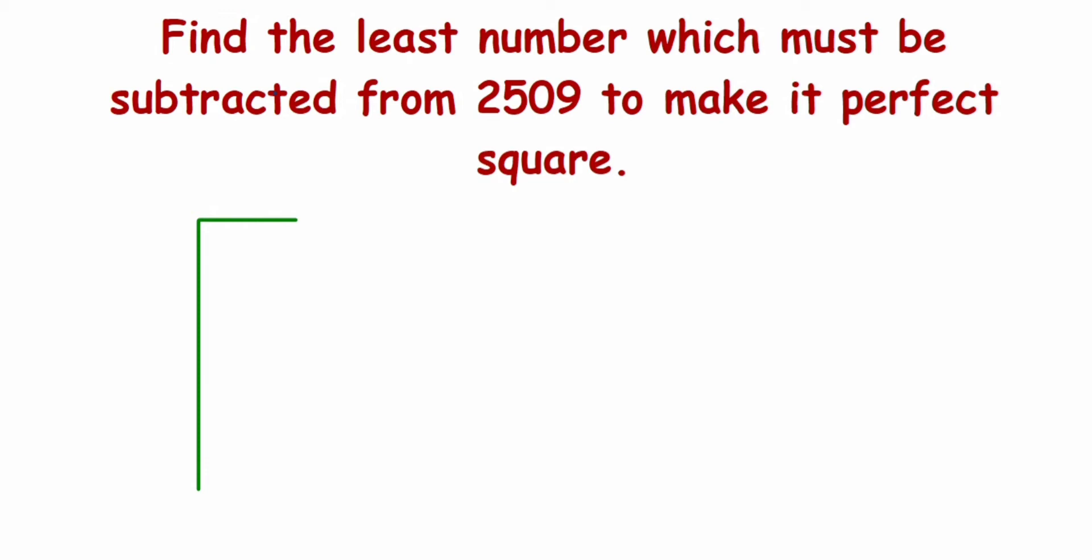This is not a normal division. This is a long division method which is used to find the square root of a given number. I'll write the number 2509. The very first step is to start pairing up from the right hand side, so 09 will form one pair and 25 will form another pair.